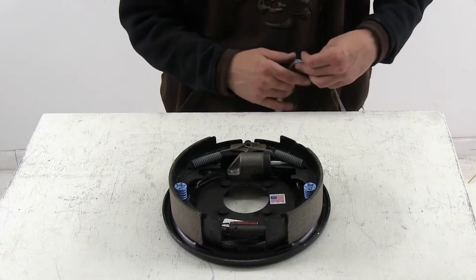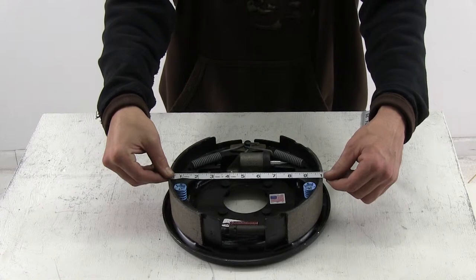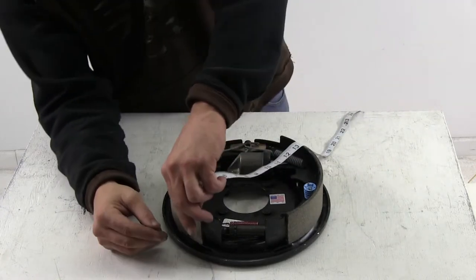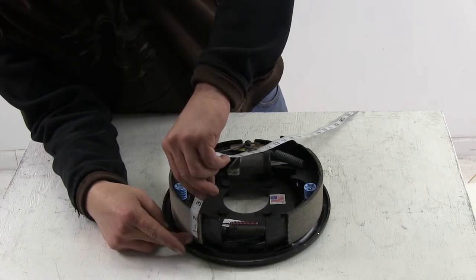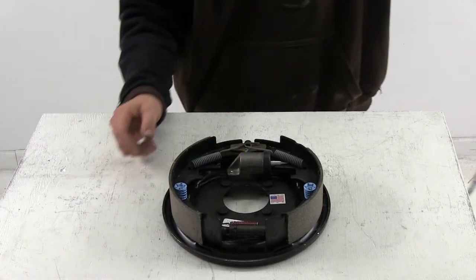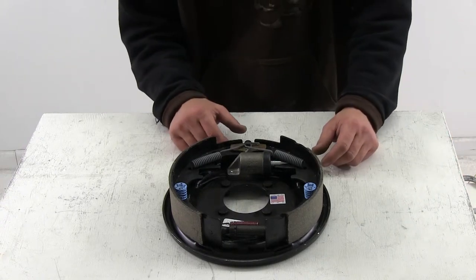To get the measurement of our assembly we'll simply measure across the linings and see that it's a 10 inch width. Then we can measure the brake linings themselves and see that it's two and a quarter. So our hub drum assembly setup will have to be a 10 inch by two and a quarter inch assembly.